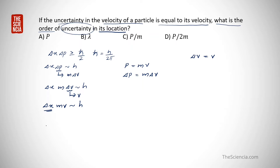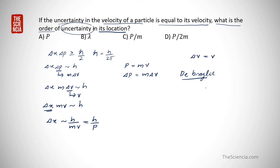Delta x is the uncertainty in location. Rearranging, delta x is approximately equal to h divided by mv. Since mv equals p, this becomes h divided by p. Recalling de Broglie's relation, lambda equals h divided by p, so h over p equals lambda. Therefore, delta x equals lambda.